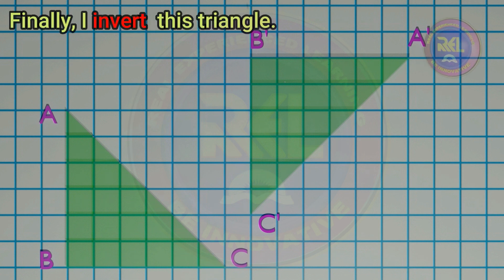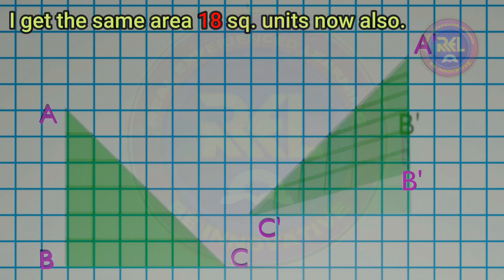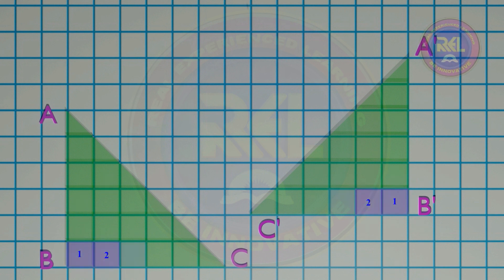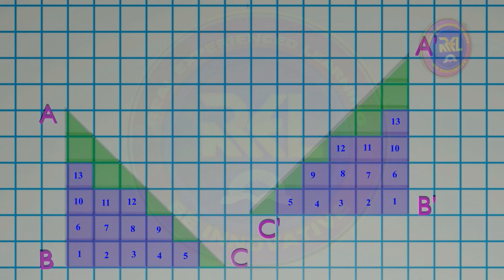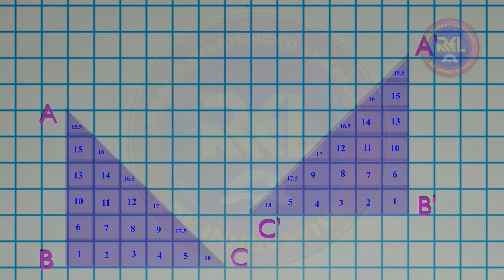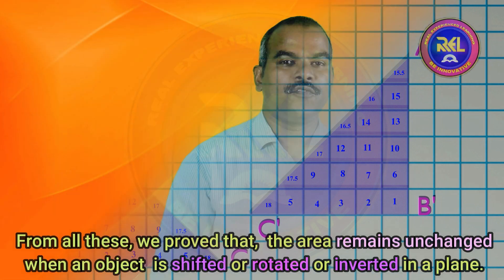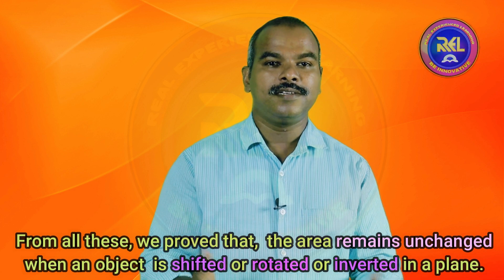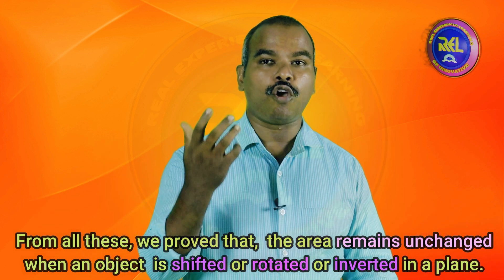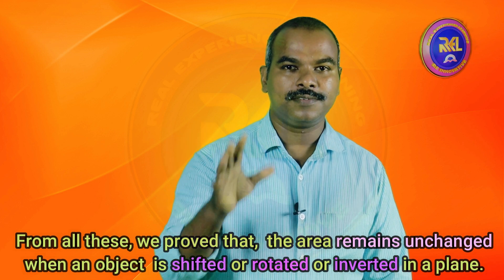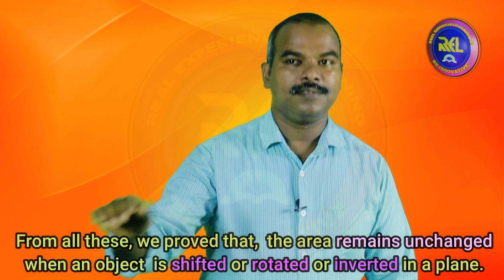Finally, I invert this triangle. I get the same area, 18 square units, now also. Counting confirms: 18 square units. From all these, we proved that the area remains unchanged when an object is shifted or rotated or inverted in a plane.